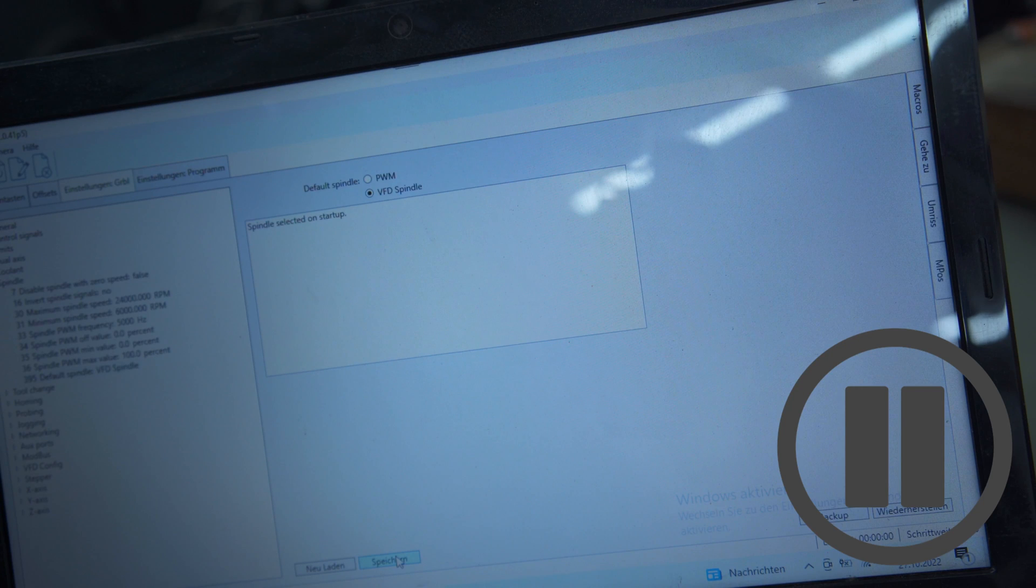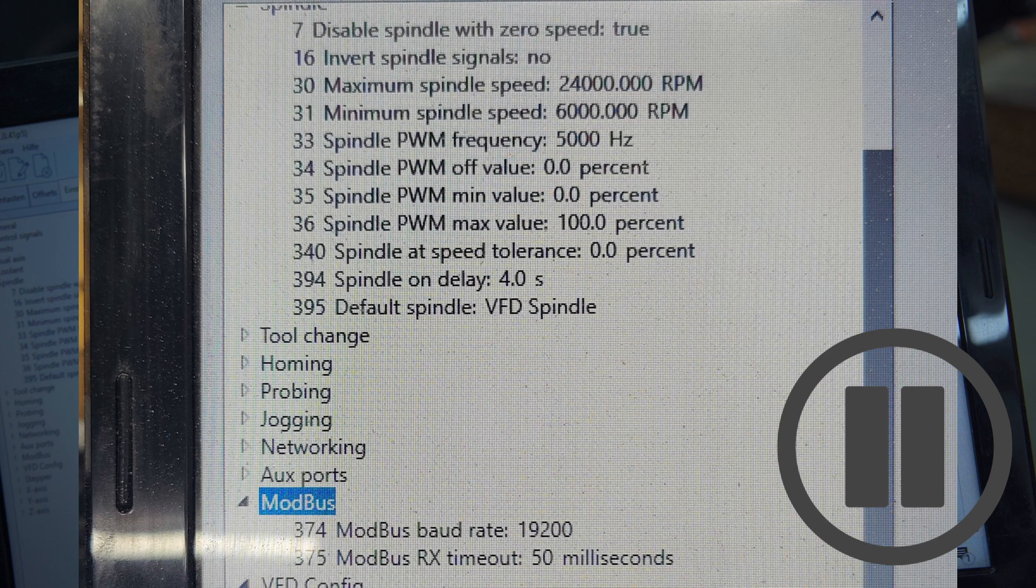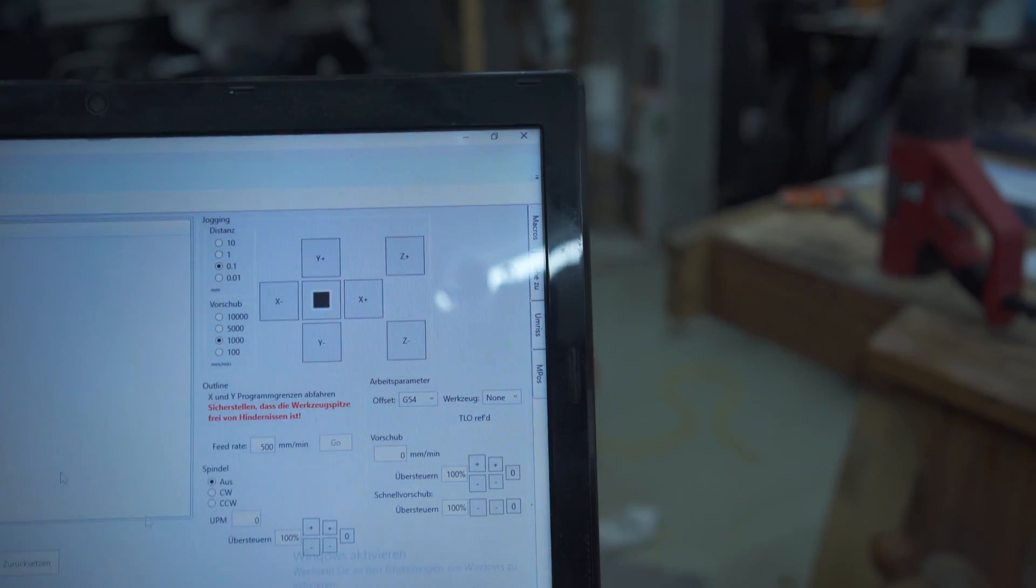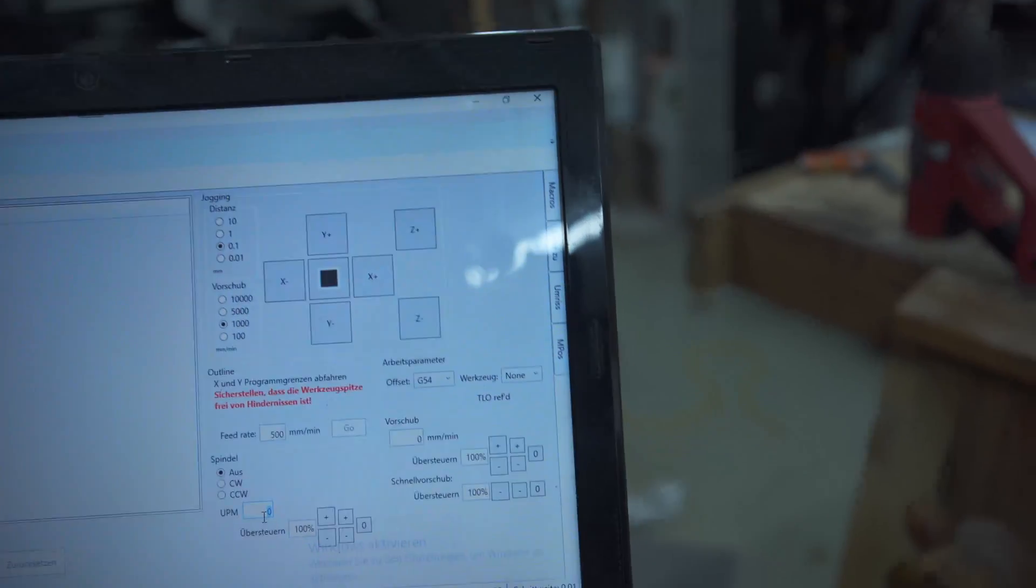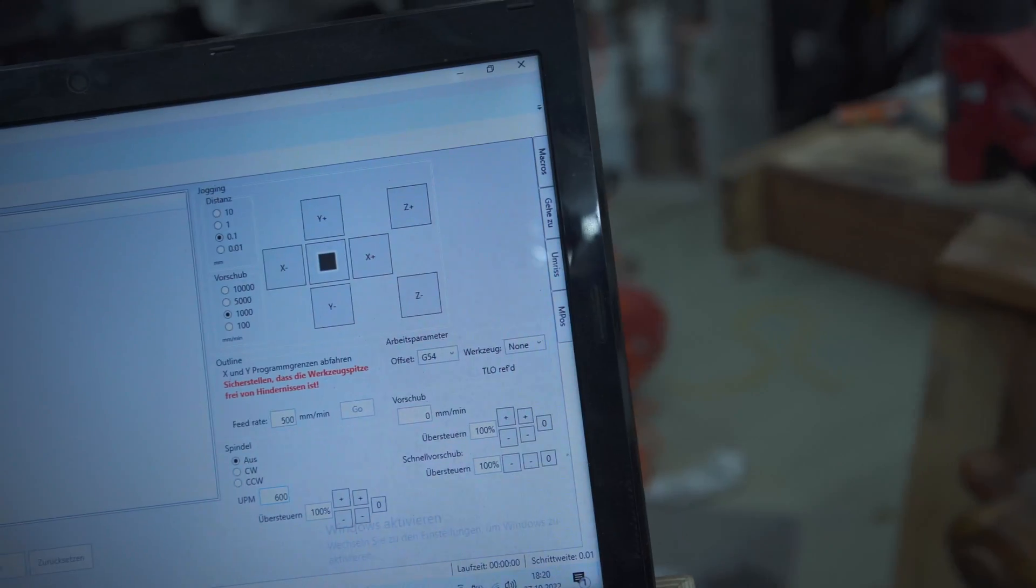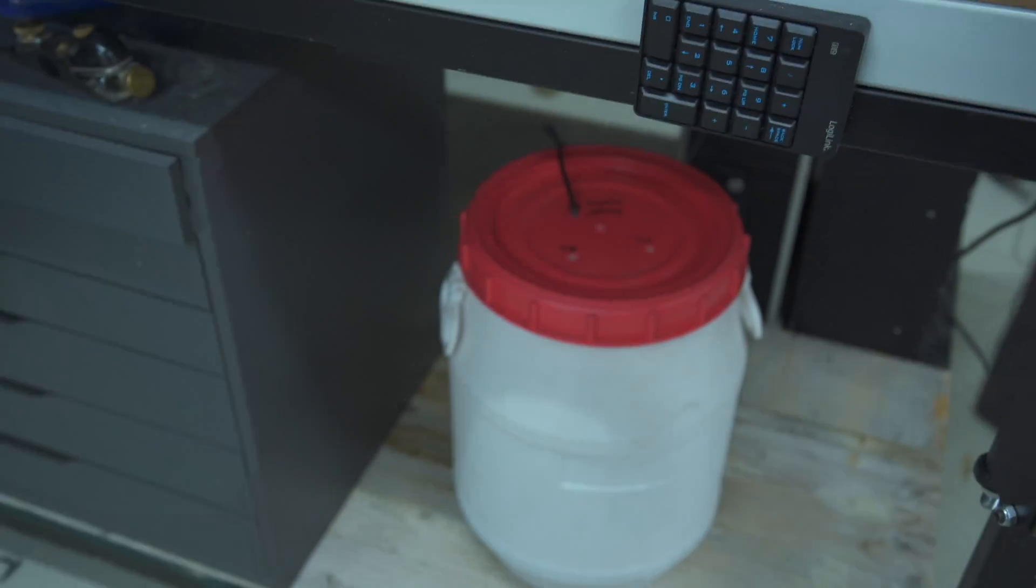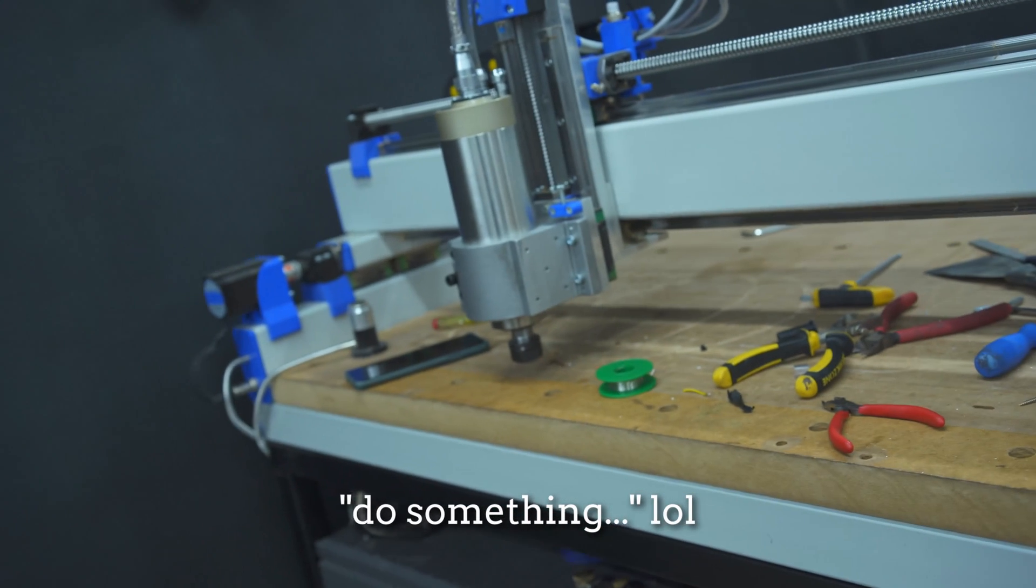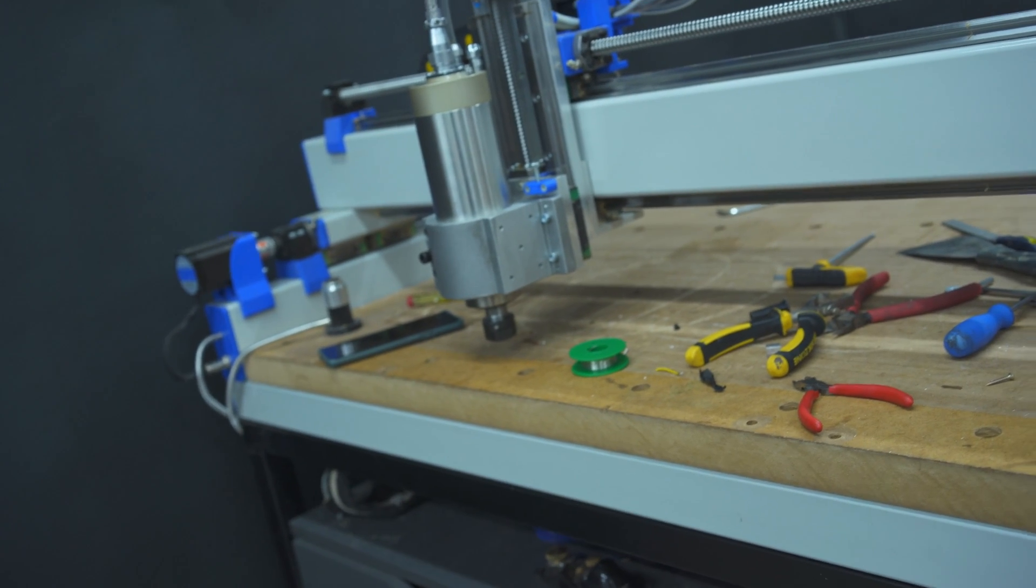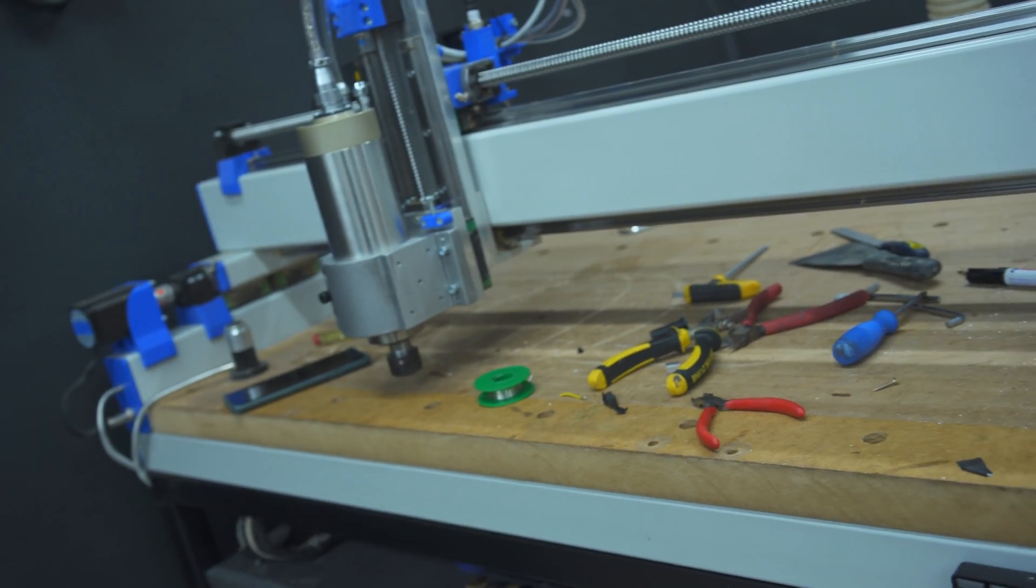Switch the spindle to VFD spindle not PWM. A short note from the other side. You also need to set your baud rate to 19200. The minimum RPM to 6000 and the max RPM to 24000. And now if I put here 6000, the spindle should start spinning.